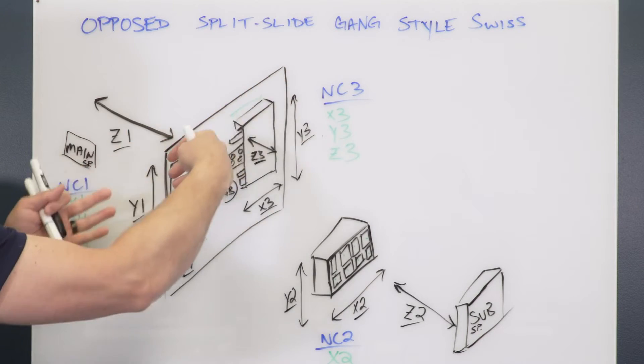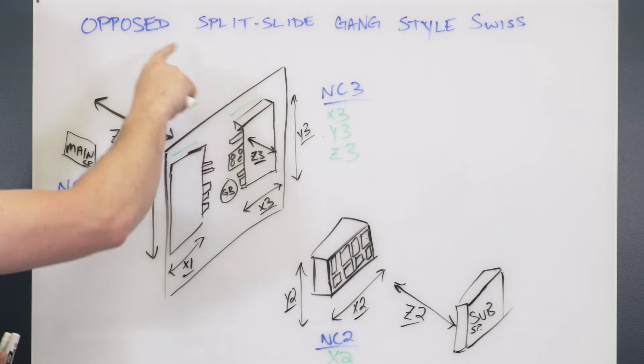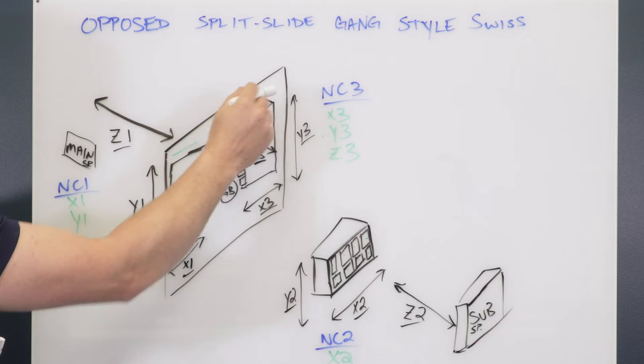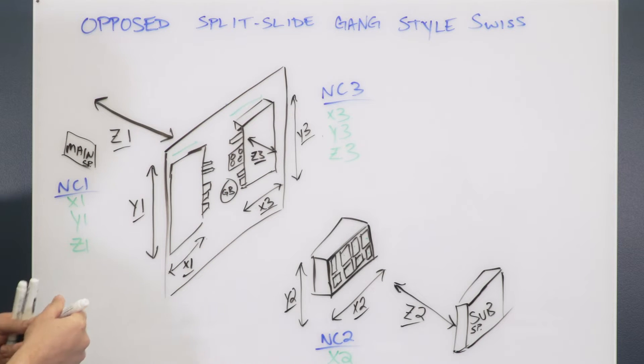What happens with a split slide is we separate these two, so now this and this are independent from each other. Now we have X1 movement here, X3 movement here, Y1 movement here, and Y3 movement here.